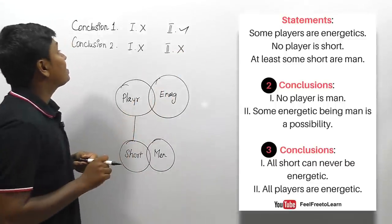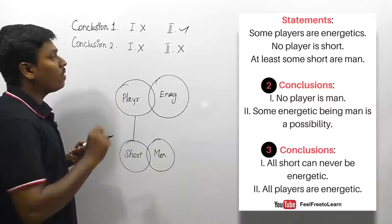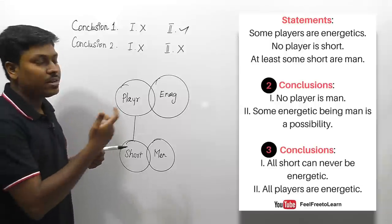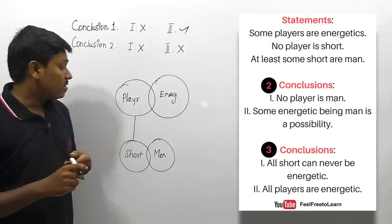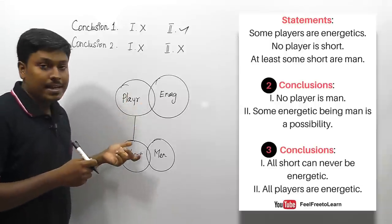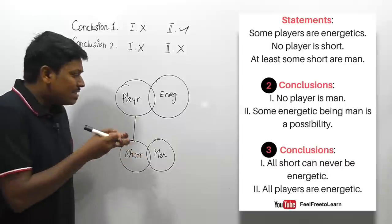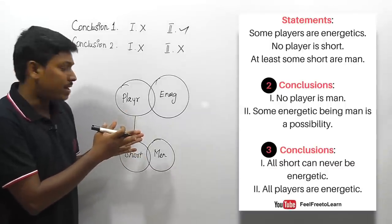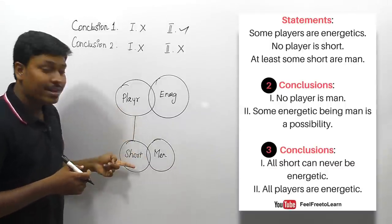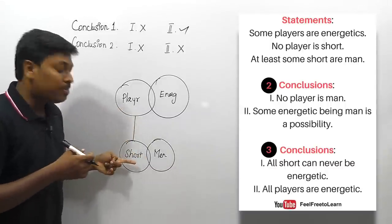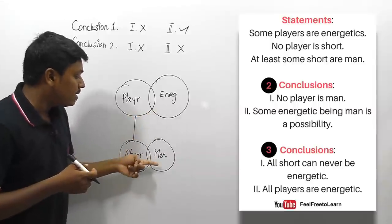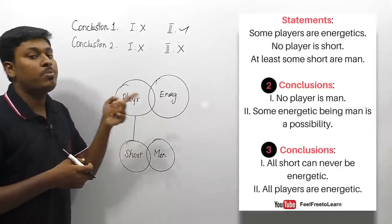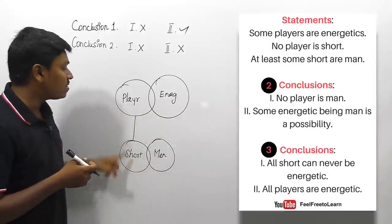For the first set, the answer is two follows; for the second set, neither follows. Always remember: after drawing a diagram, take five to ten seconds to analyze the Venn diagram properly. There is no link between player and short, but there are possible connections between short and energetic, men and energetic, and men and player.